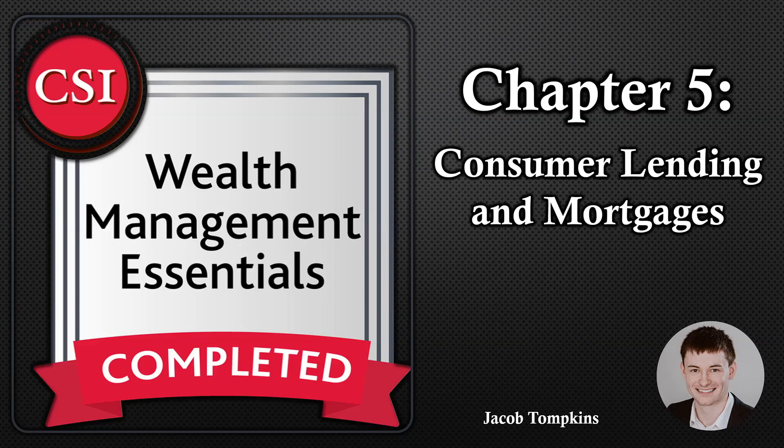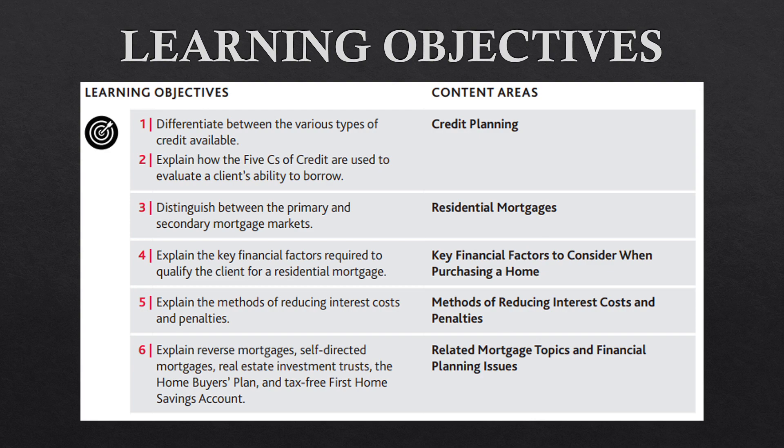Welcome to chapter 5 of the Wealth Management Essentials course. In this chapter we will be talking about consumer lending and mortgages. There are six different learning objectives: credit planning, residential mortgages, key financial factors to consider when purchasing a home, methods of reducing interest costs and penalties, and related mortgage topics and financial planning issues.